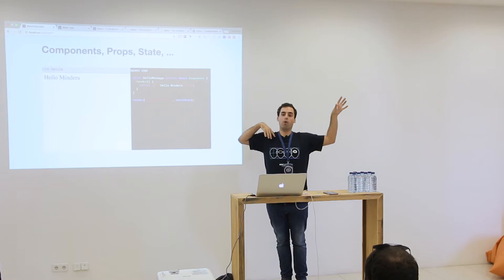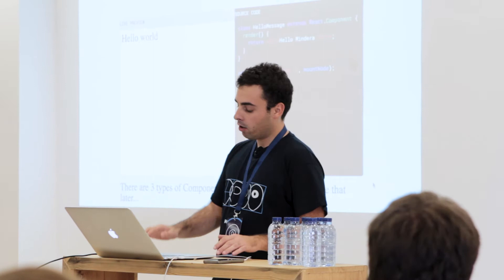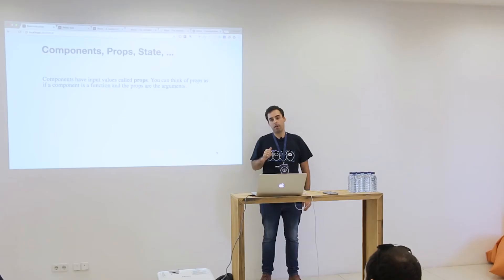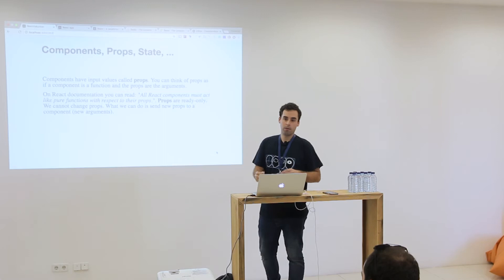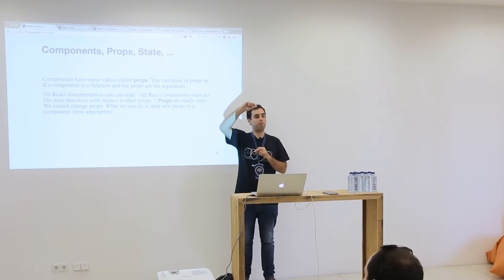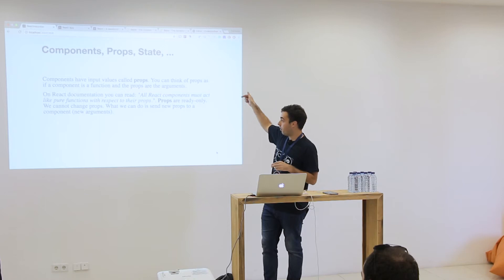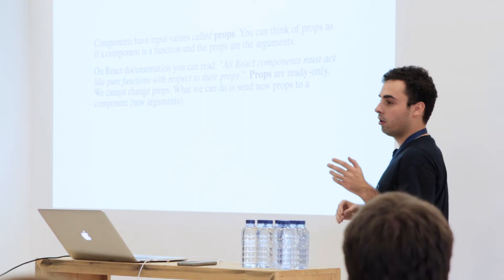In React we have three types of components. We have props — you can think of props like arguments of a function. If you think of a component as a function, props are the arguments. Props should be pure on the component. The parent passes props to the children, and the component should always return the same output for the same props and state. This is good because the bugs are fewer — nothing changes that we didn't expect.